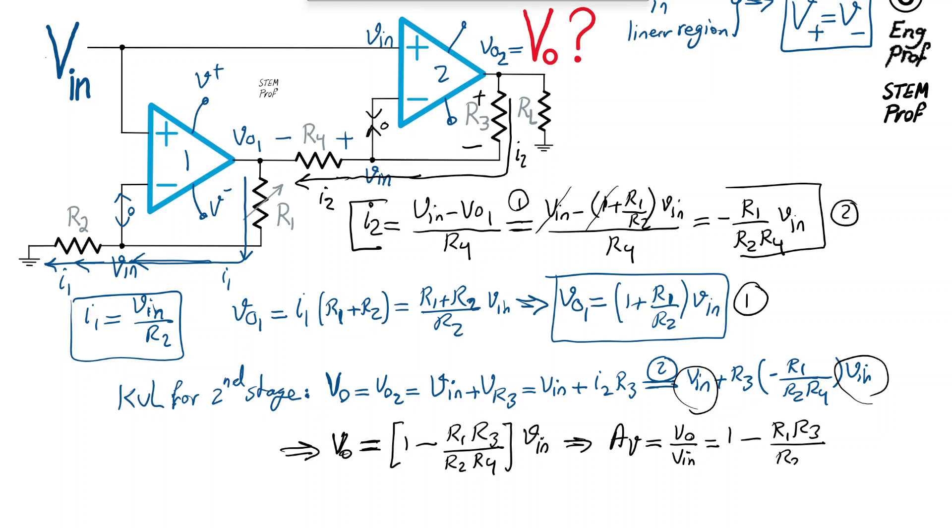So it has a nice similarity to what we used to see from a non-inverting amplifier, for example, as you can see here, except that instead of a positive sign, we have a negative sign here. That's an interesting realization, and then also notice that again, R1 is a potentiometer resistor, so we can have extra control here.